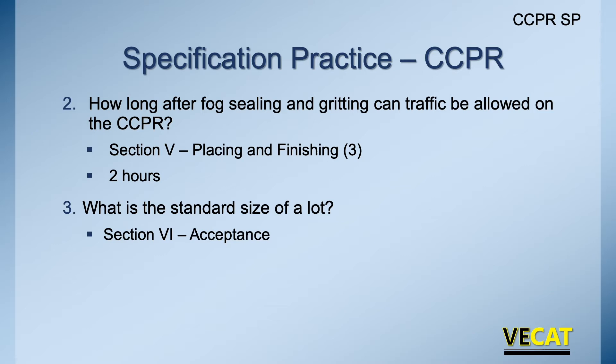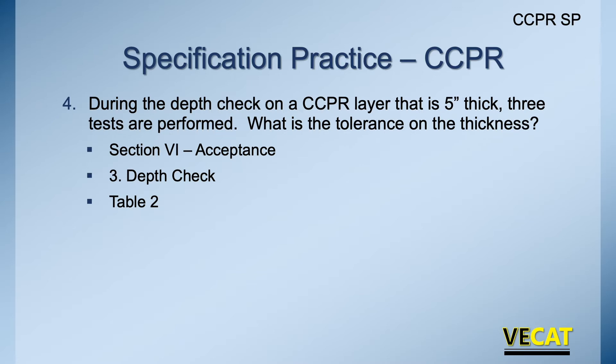Just like asphalt paving, the standard lot size is 5,000 linear feet. For the depth check on a five-inch lift with three tests, looking under Section 6 Acceptance, Subsection 3, Depth Check and Table 2, the tolerance is plus or minus half an inch. So the average of three tests must be between four and a half and five and a half inches to be acceptable.